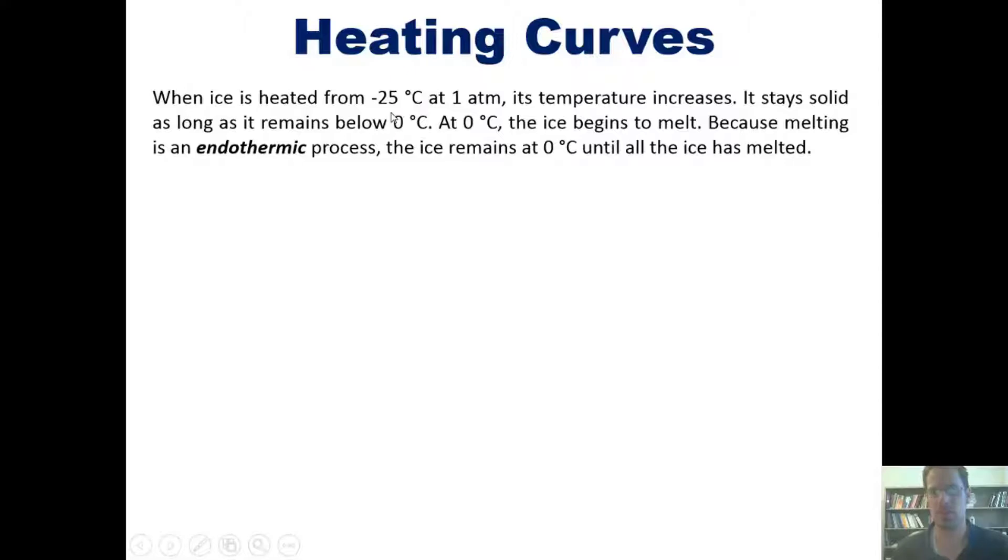When ice is heated from negative 25 degrees Celsius at one atmosphere, you might imagine that its temperature starts to increase. It stays solid as long as its temperature remains below zero degrees Celsius. At zero degrees Celsius, however, the ice starts to melt. Because melting is an endothermic process, the ice stays at zero degrees C until all the ice has melted.